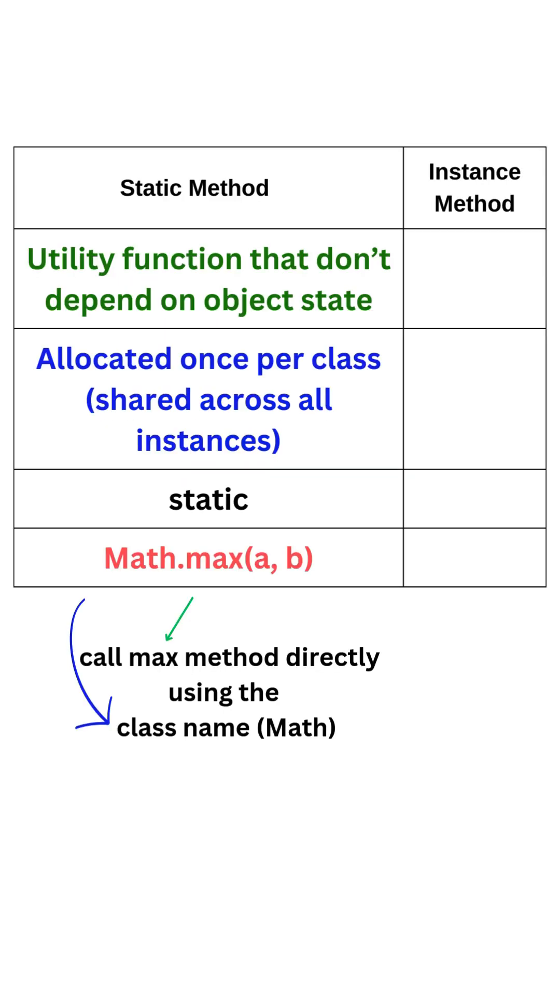Static methods are used for utility functions that do not depend on object state. Allocated once per class and shared across all instances. Declared using the Static keyword.